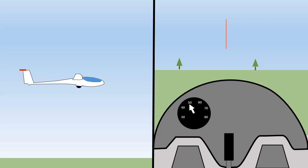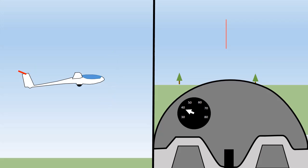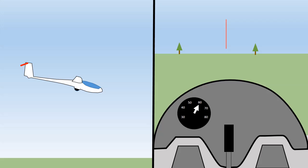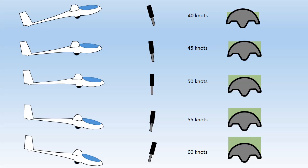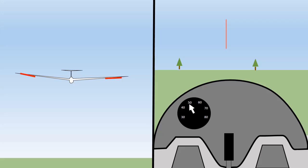The first control we're going to look at is the elevator which controls pitch. Pitch is movement in this direction and it is controlled by moving the stick forwards and backwards. If you pull the stick back the nose rises, there's less ground in view and the airspeed has decreased. Conversely, if you push the stick forward the nose lowers, more ground comes into view and the airspeed increases. It's important to remember that for each position of the stick there's a corresponding attitude and speed of the glider. The elevator is the most sensitive of the controls, so quite small movements of the stick can result in quite large changes in speed.